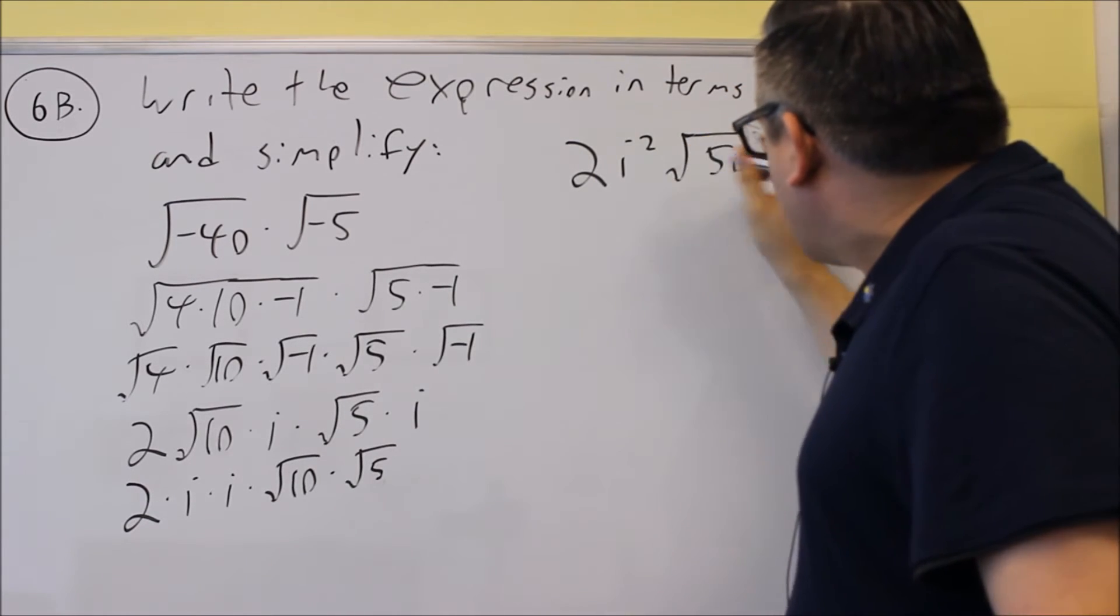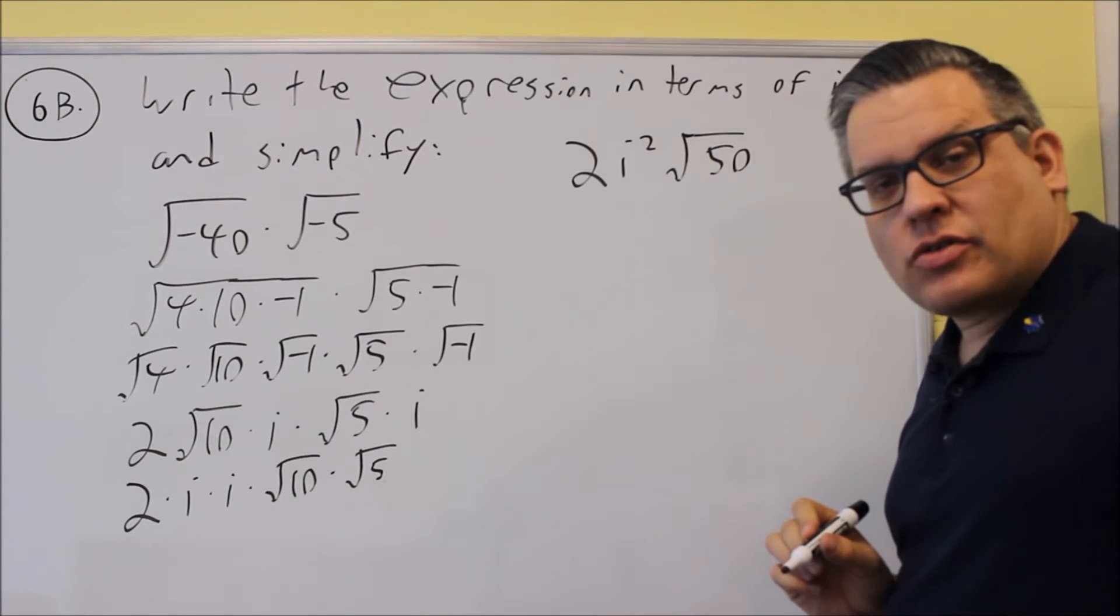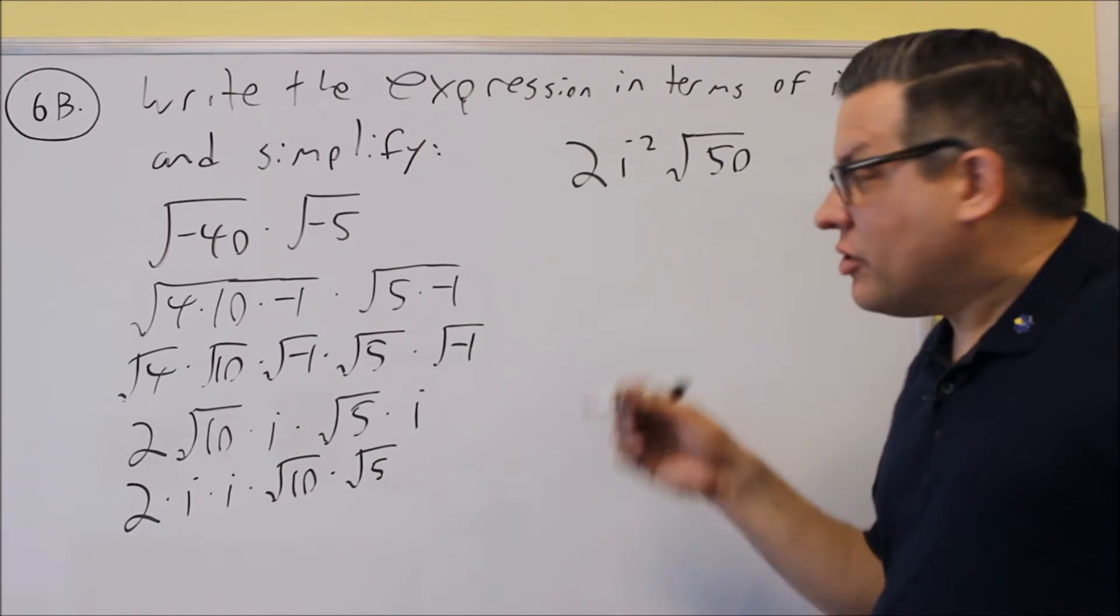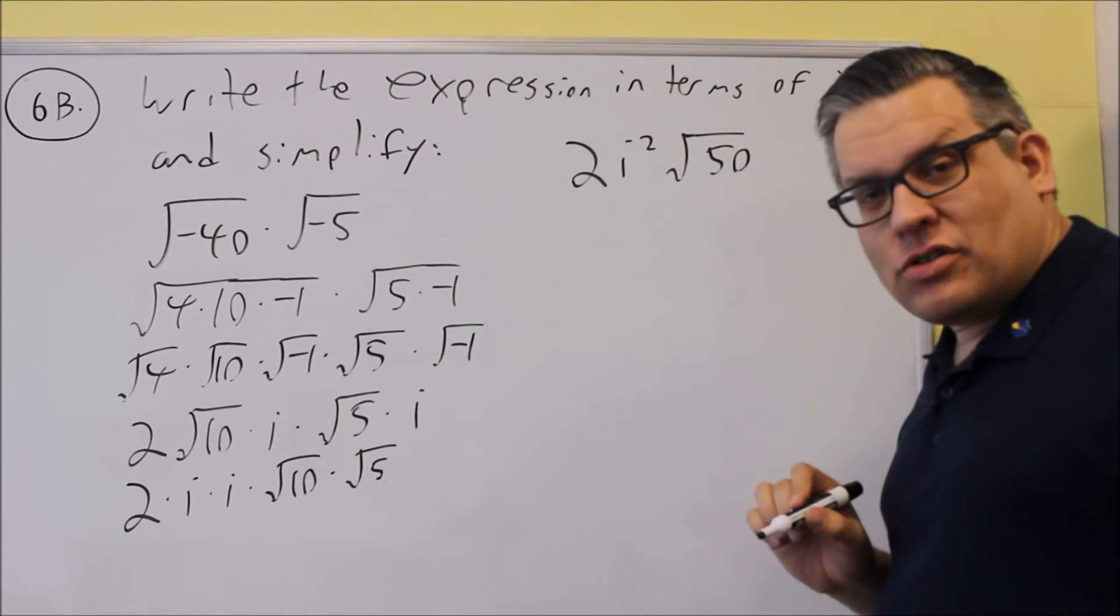Not done yet, because we want to break down the square root of 50. Square root of 50 can be written as 25 times 2, because 25 is the largest perfect square that divides evenly into there.